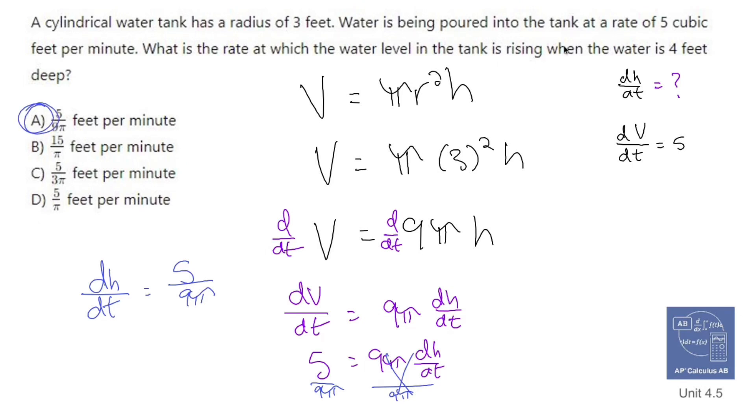Now you might be thinking, well, what about the 4 feet part? What about the 4 feet part? It doesn't matter. If you're pouring water in a cylindrical tank, it's not going to speed up if it's at 4 feet or 3 feet or 6 feet or whatever. Okay, it doesn't really matter. So that's how you do it.